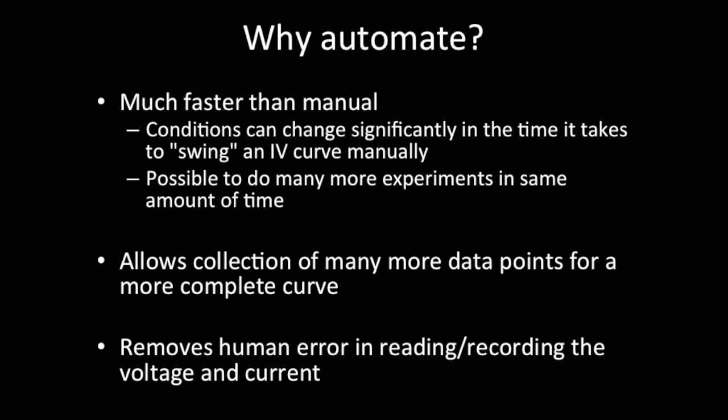Why automate this? We can do it manually, and it has been done manually for many years in Gil's class, but automating is much faster. One advantage is that conditions can change pretty significantly in the time it takes to swing one of these curves manually. Another benefit is that it's possible to do many more experiments in the same amount of time — more experiments, more learning. It also allows you to collect many more data points for a more complete curve, and it removes human error, which causes inaccuracies in some manually generated graphs.